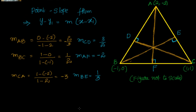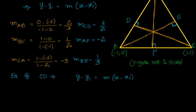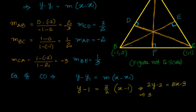Now we frame the equations. Altitude CD must pass through point C. Using y minus y1 equals m times x minus x1: y minus 1 equals (3/2) times (x minus 1). Simplifying: 2y minus 2 equals 3x minus 3, giving us 3x minus 2y minus 1 equals 0. That is the equation of CD.